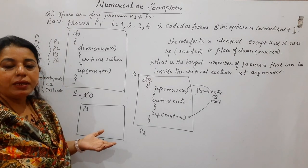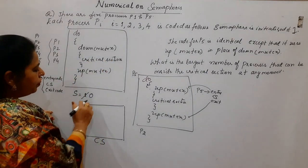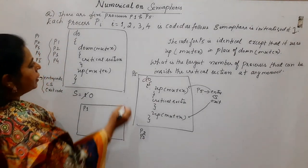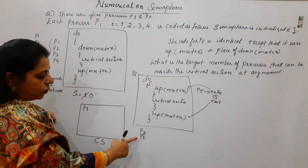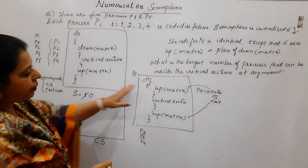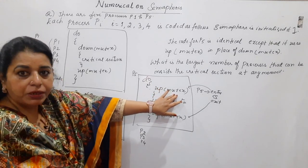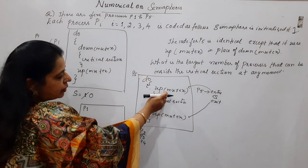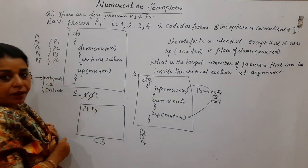Similar will be the problem with P3 and P4 — they also perform the down operation but the current value of semaphore is 0, so P3 and P4 also become blocked. Next comes P5. P5 has to perform the up operation on mutex to enter. The up operation will increment the semaphore value by 1. When P5 performs the up operation on mutex, the value for semaphore becomes 1 and P5 can enter into the critical section. As soon as the value for the semaphore becomes 1, P2 which was trying to enter can now enter — it performs the down operation and enters.